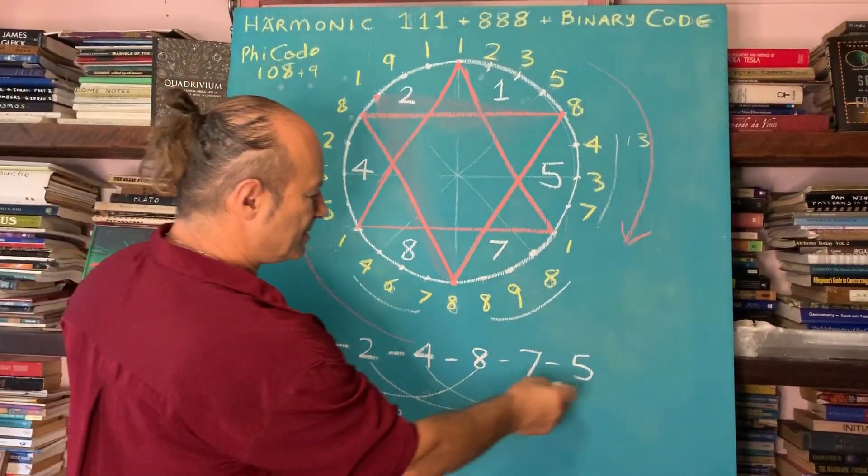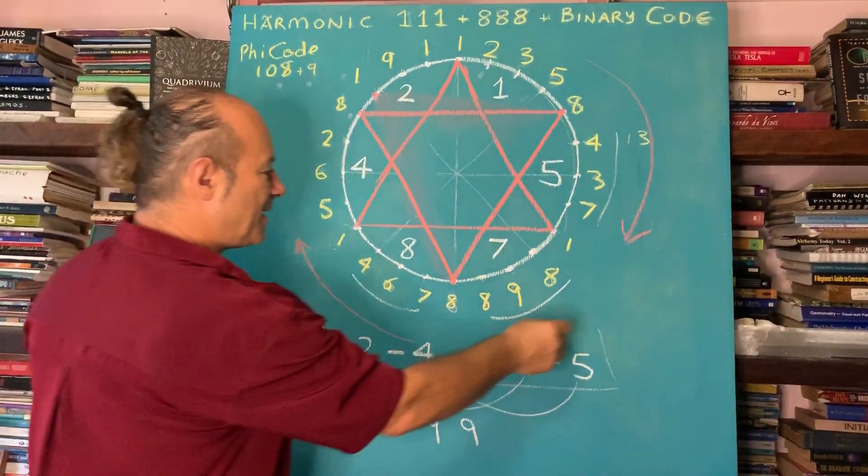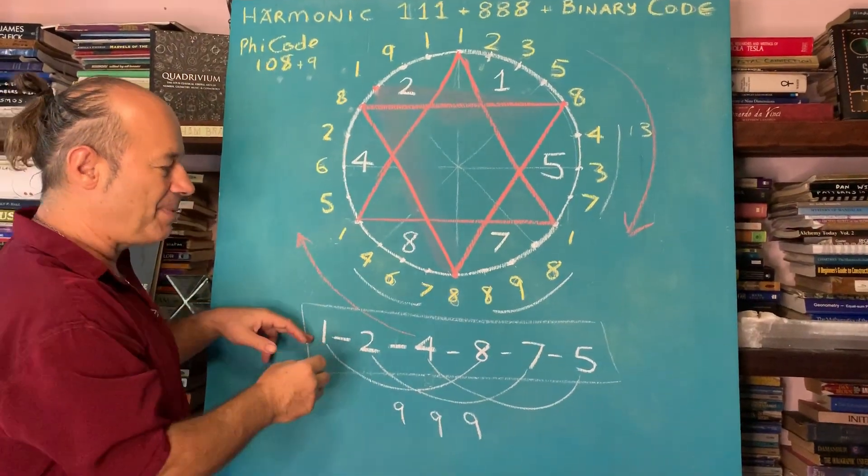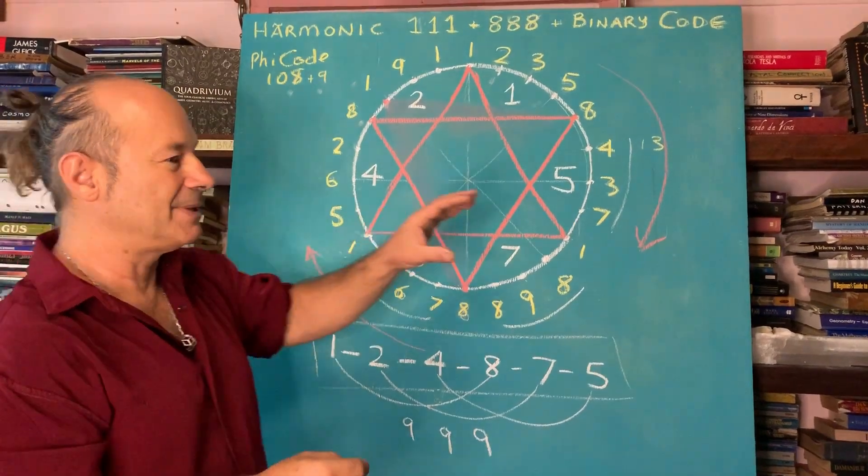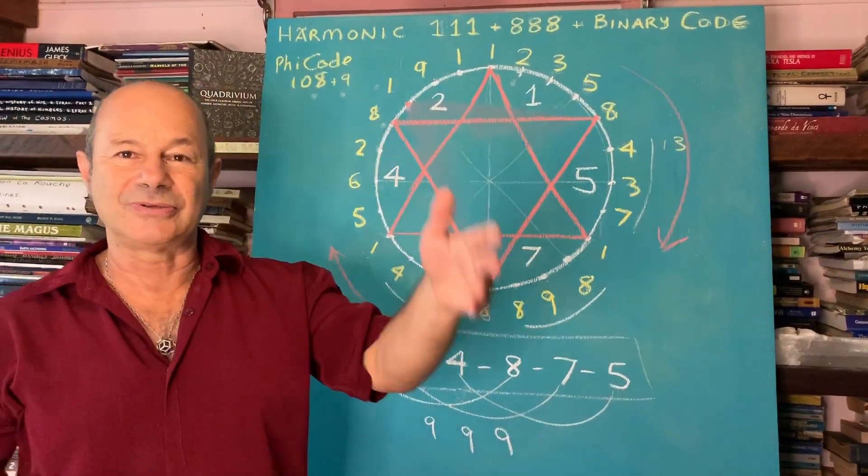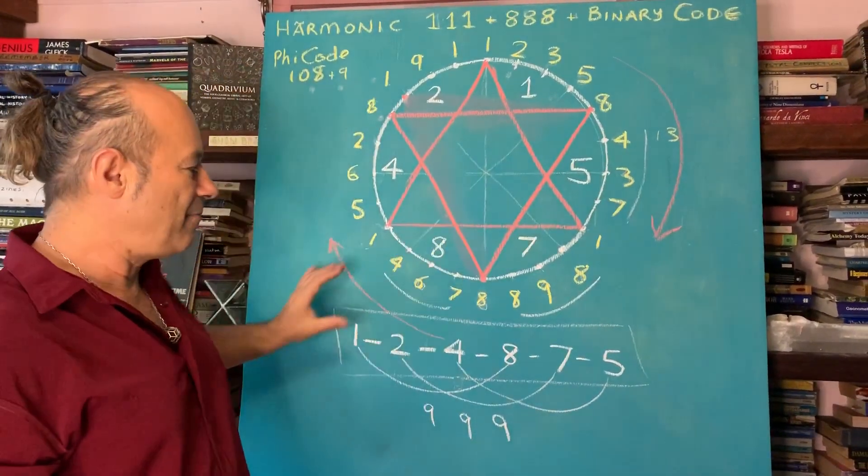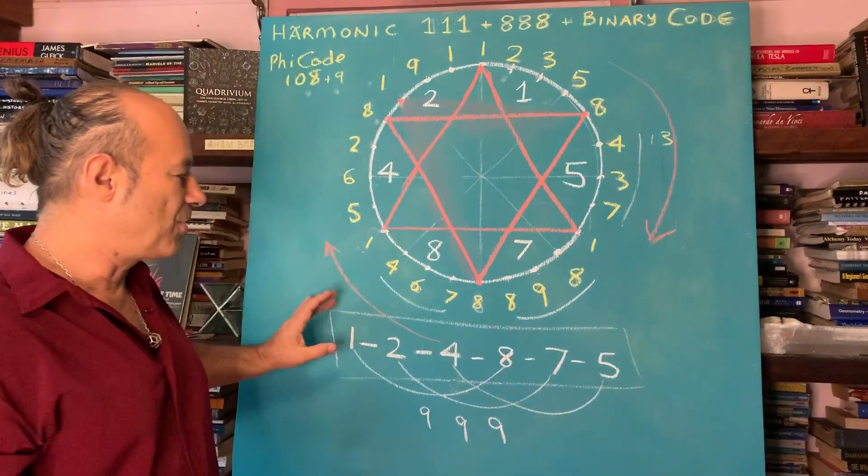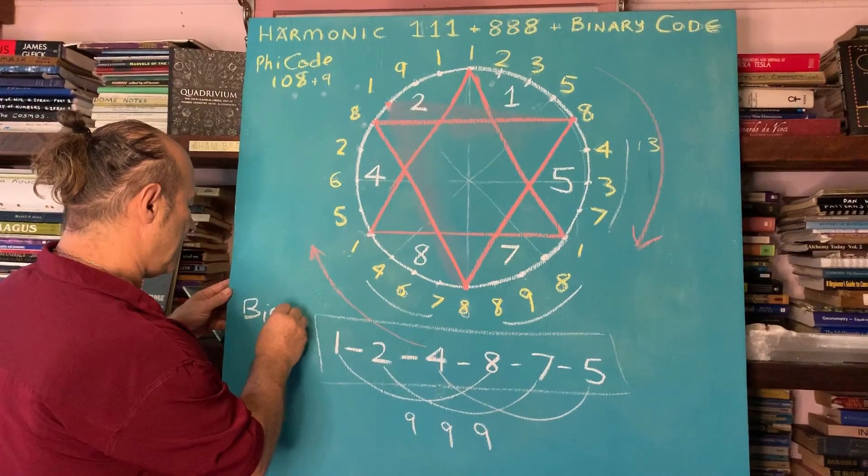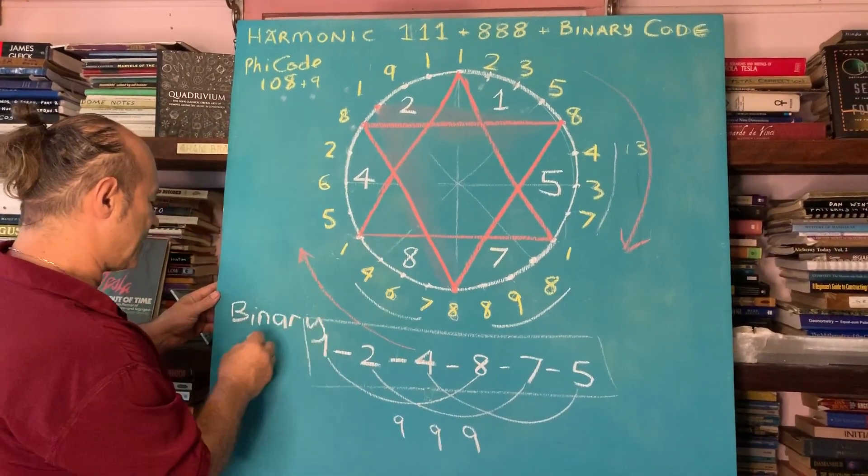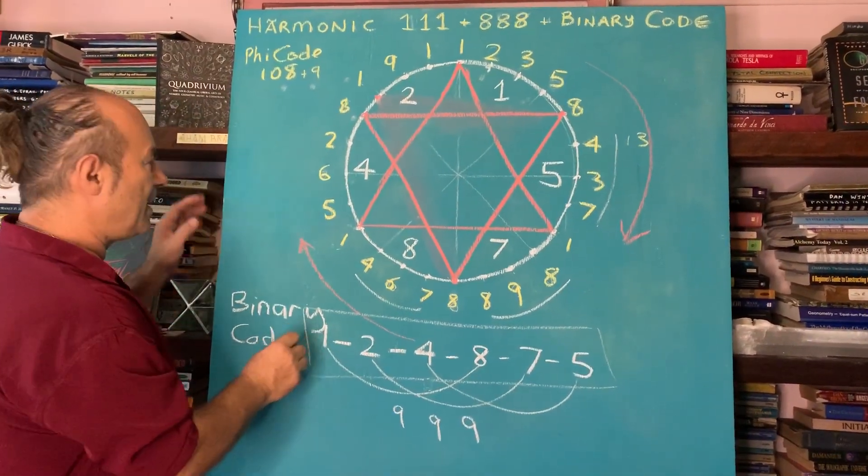When we reduce the doubling sequence, it has a periodicity of six, but the doubling sequence is the big numbers two, four, eight, 16, 32, 64 goes forever. But when we find what repeats, I'm calling that the binary code. This is quite a rare discovery because it's linking two diverse sequences.